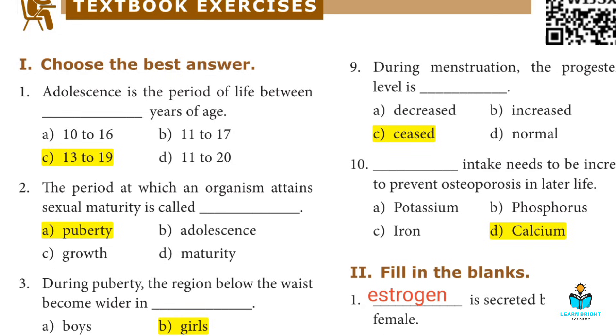First: Adolescence is the period of life between which ages? Answer C: 13 to 19.